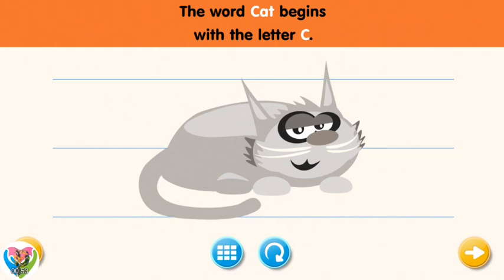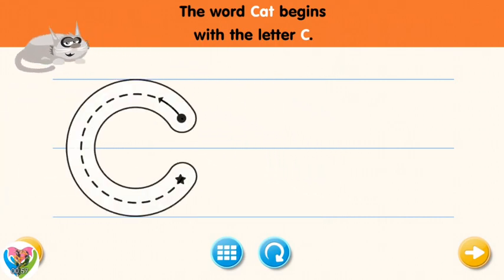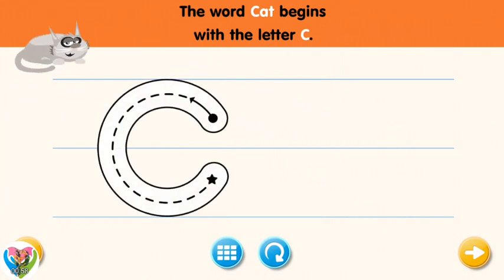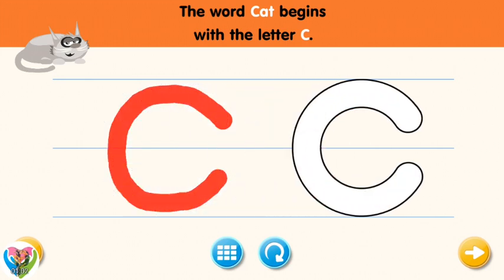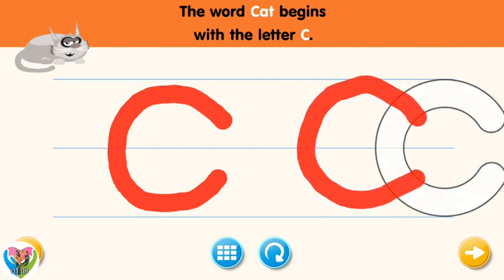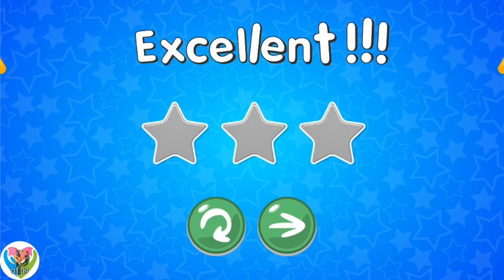The word cat begins with the letter C. Trace the letter C. Connect the dot and the star with a line. You rock! Now write the letter C. It's easy. Try again. Excellent!